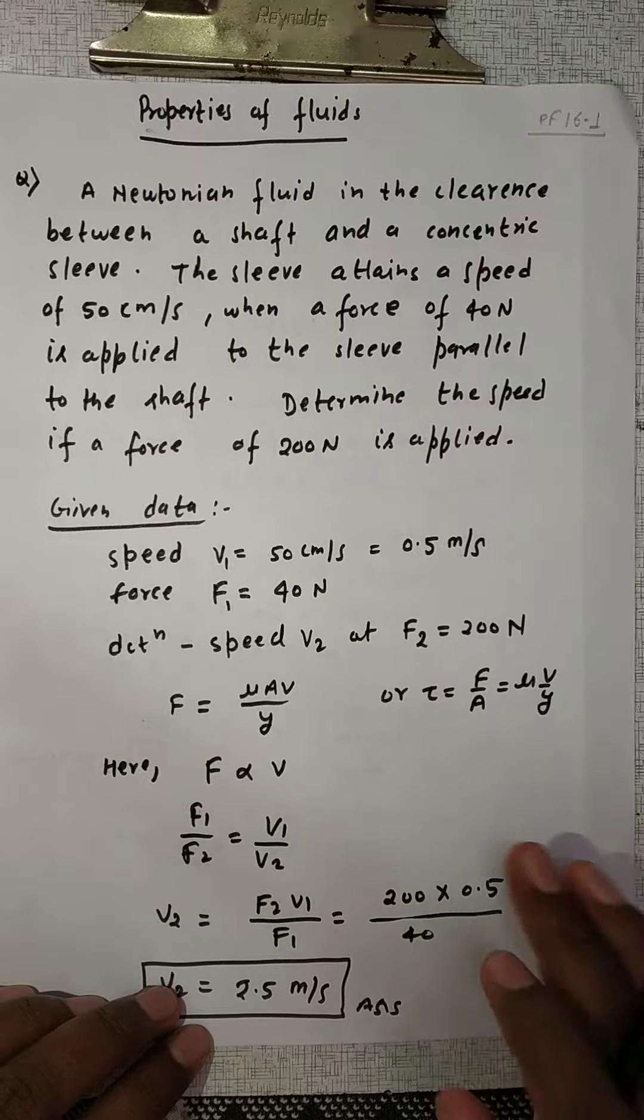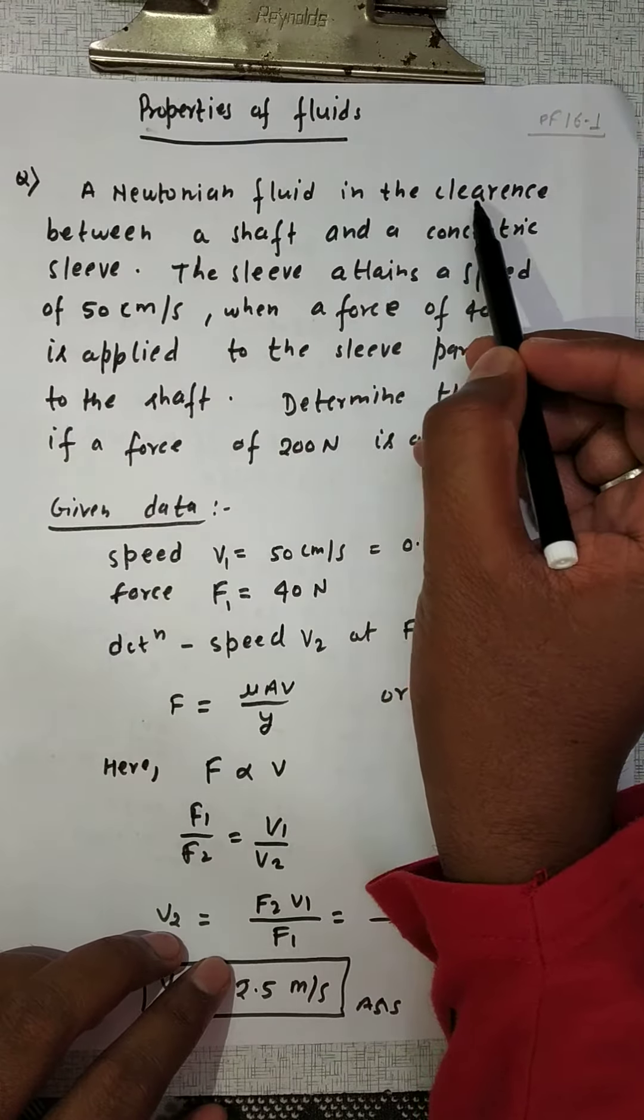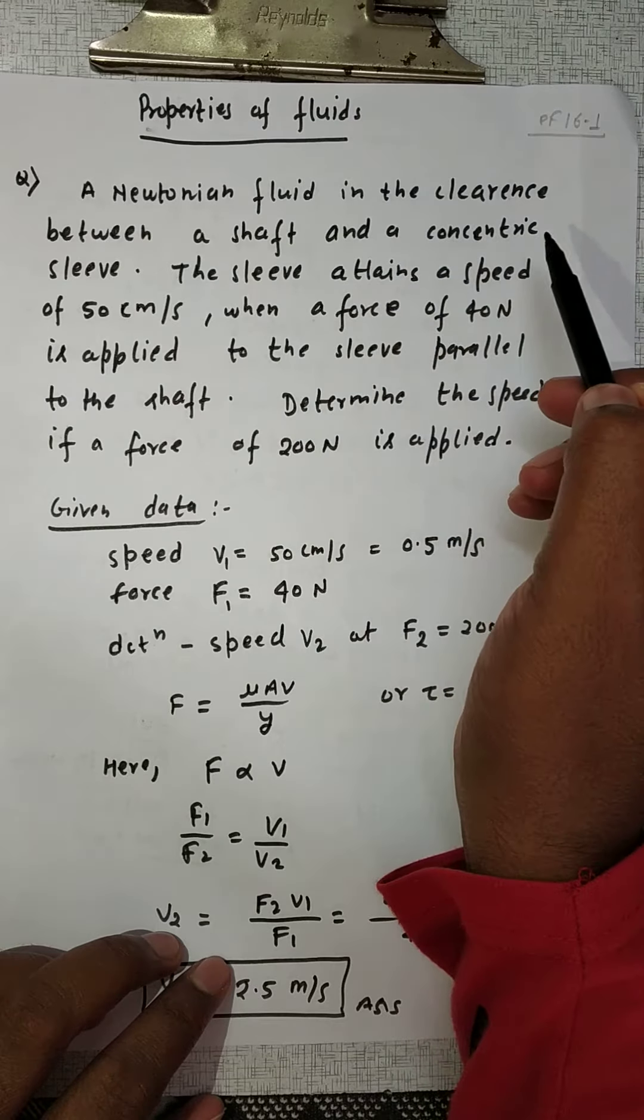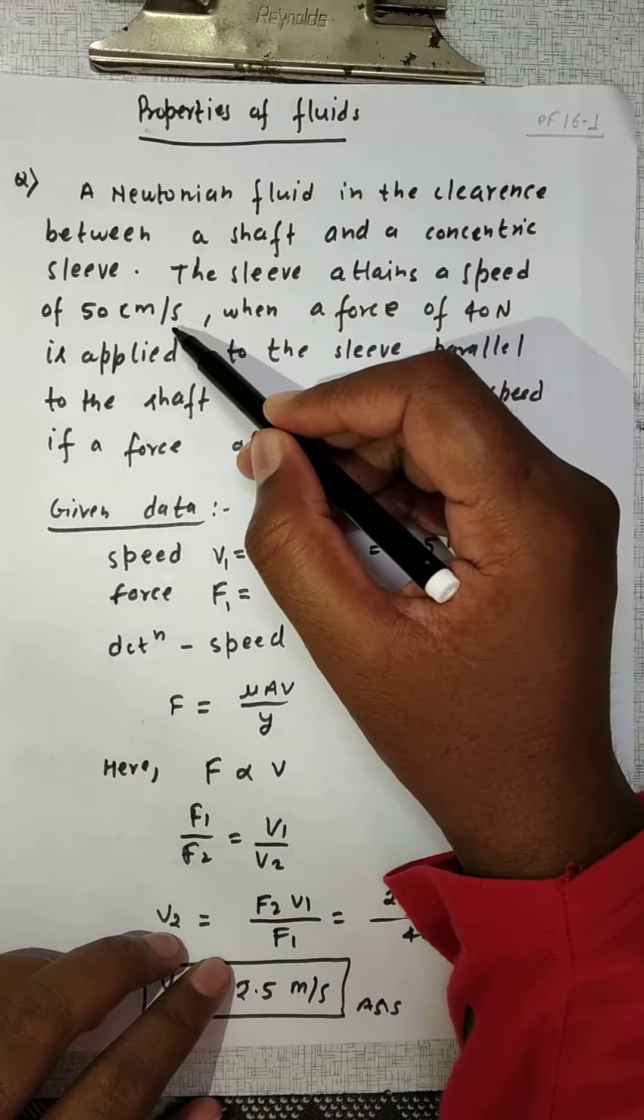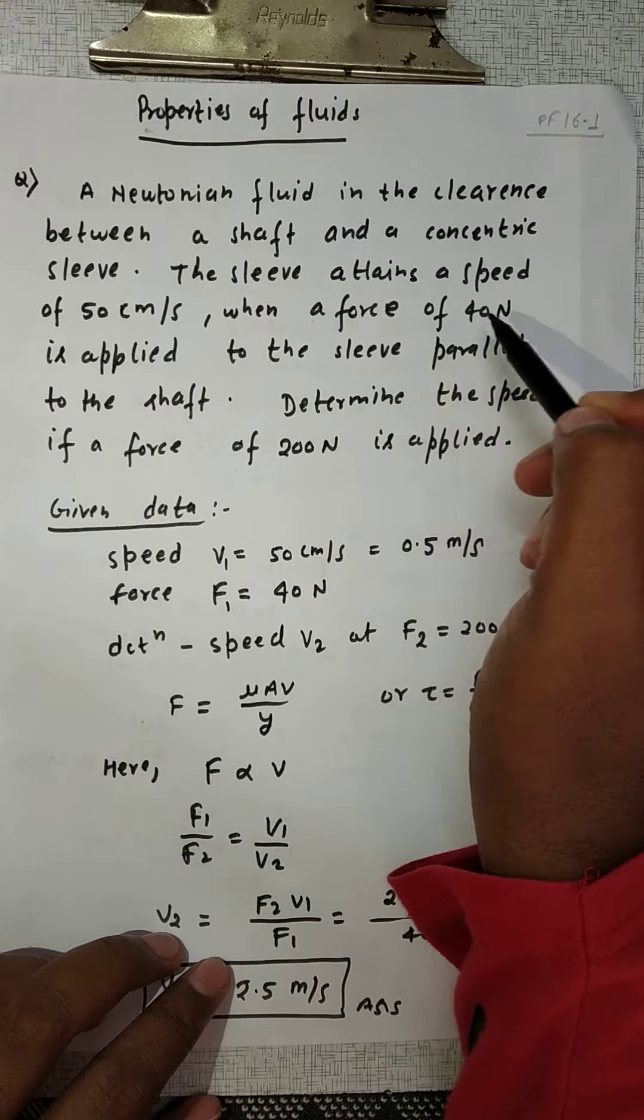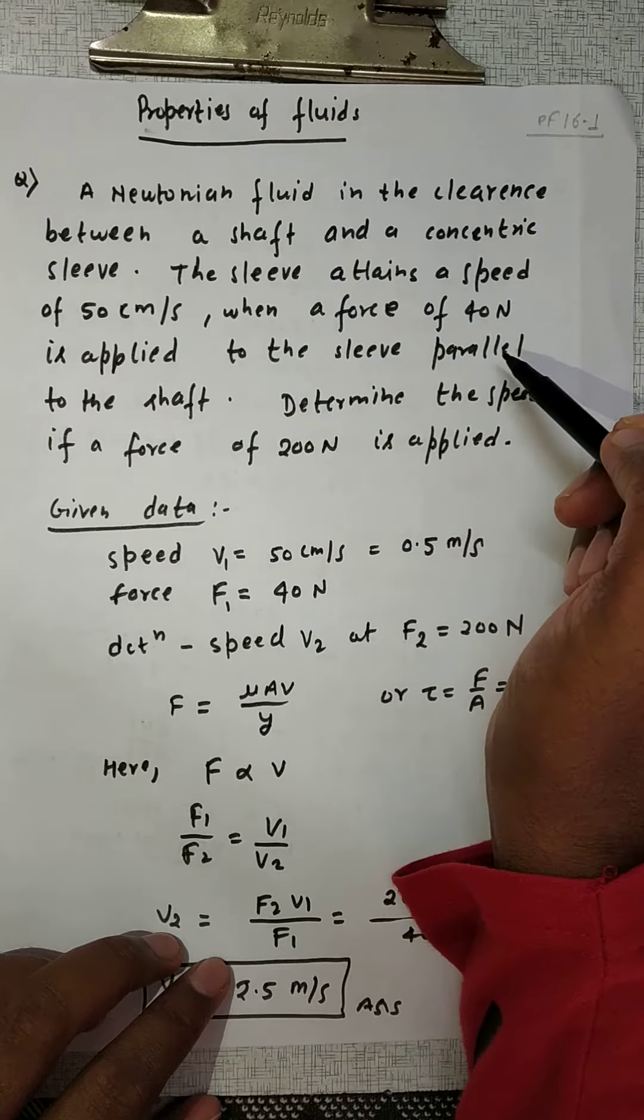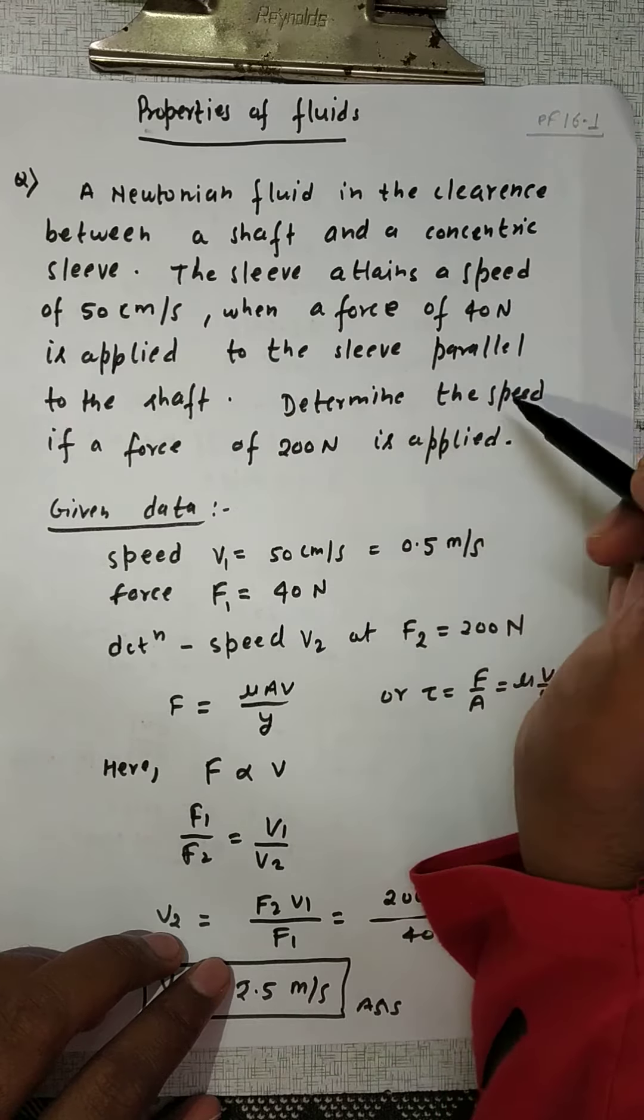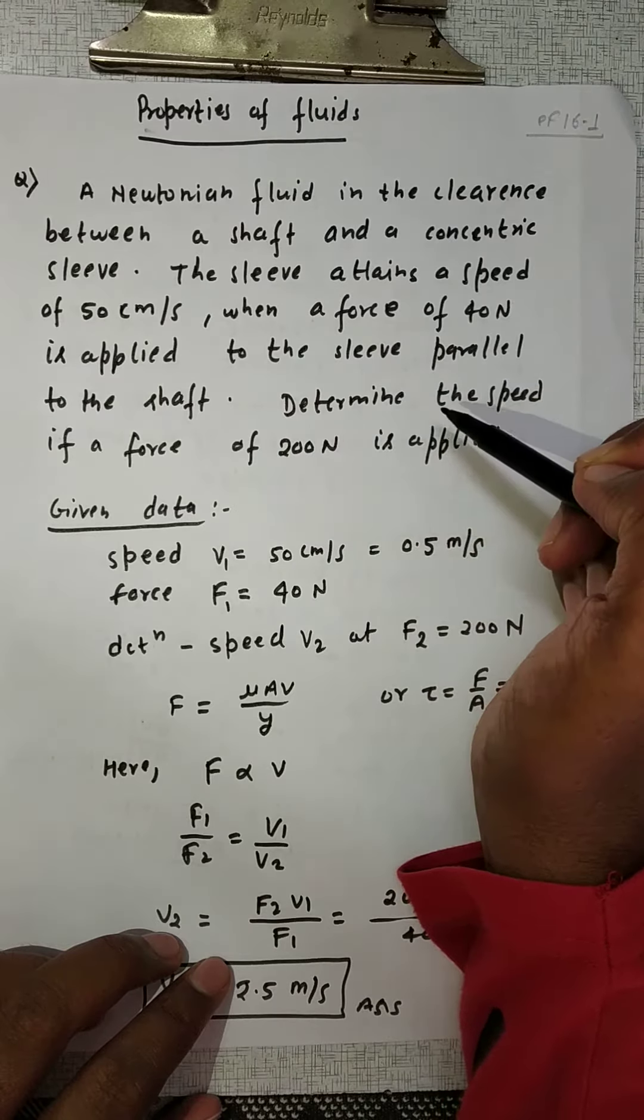So the question is: A Newtonian fluid is in the clearance between a shaft and a concentric sleeve. The sleeve attains a speed of 50 centimeter per second when a force of 40 Newton is applied to the sleeve parallel to the shaft. Determine the speed if a force of 200 Newton is applied.